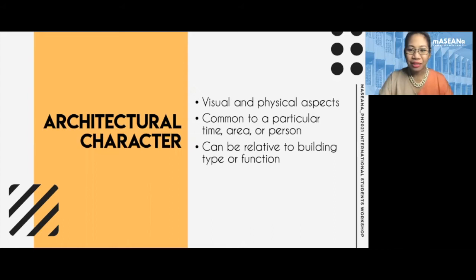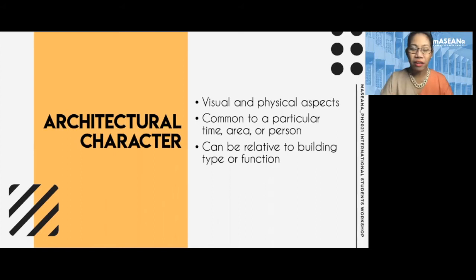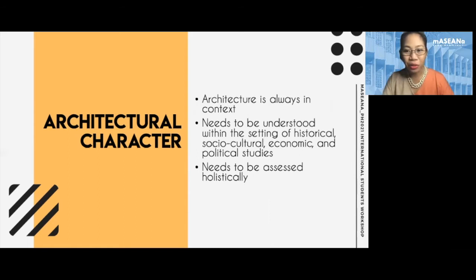Character can also be connected to function — how we look at a building and know that it is a church or a hospital or a house just by looking at it, because there is something both visual and physical that affects our perception. But it's not enough to look solely at the visual. This information has to be taken into context with the historical, social, cultural, economic, and political situation at the time the architecture was produced. Architecture needs to be assessed holistically.